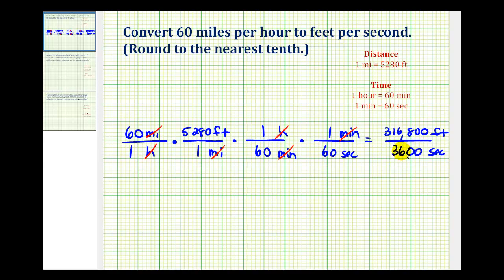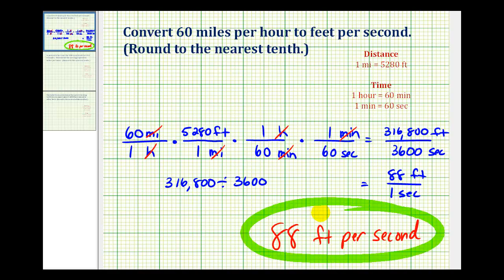Now to convert this rate to a unit rate or the number of feet per one second we just need to perform this division. And 316,800 divided by 3,600 will give us our unit rate. And they're asking us to round to the nearest tenth but this comes out to exactly 88. So this would be 88 feet per one second. But you can also write this as 88 feet per second. I hope you found this helpful.